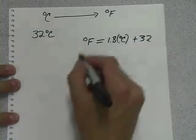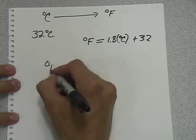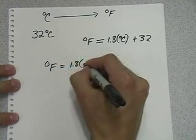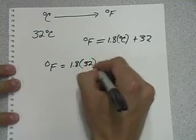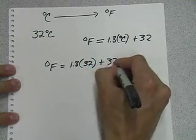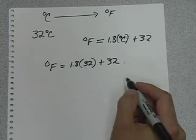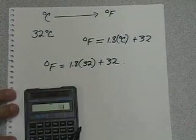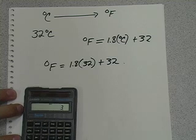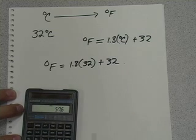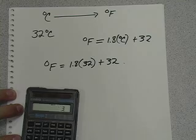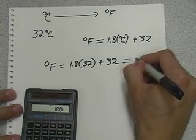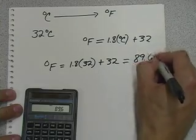So we simply take this degrees Fahrenheit equals 1.8 times 32 plus 32. And that would come out to 1.8 times 32 plus 32 equals 89.6 degrees.